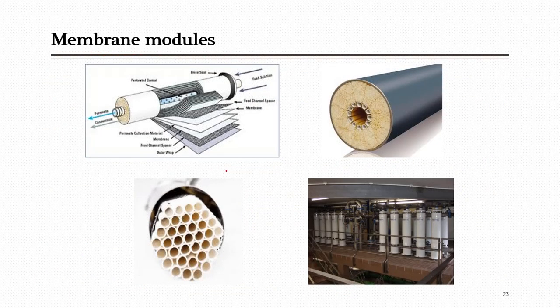Here you can see different membrane modules shown: spiral wound membrane modules, hollow fiber modules, and a module in tubular structure. There is also a honeycomb-shaped structure module. From this diagram, you can see these kinds of units inside which many membranes are arranged for separation, installed in a plant.